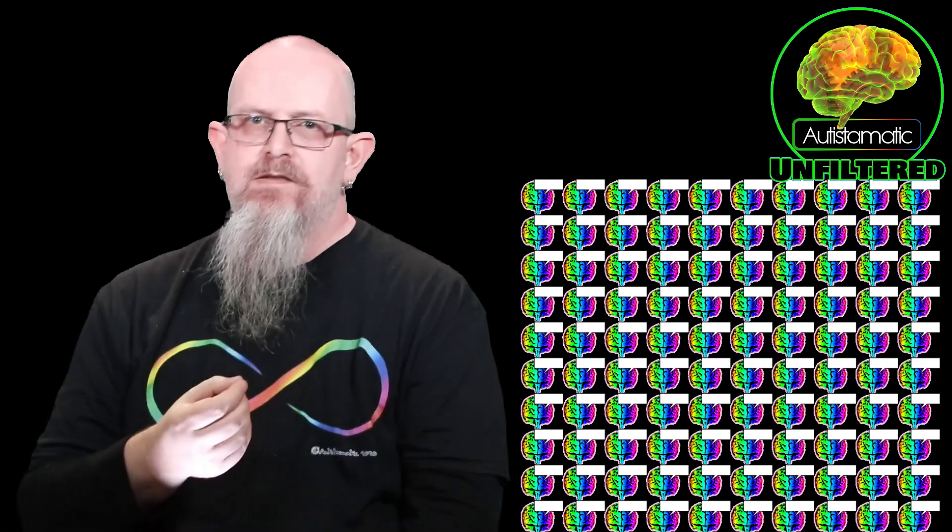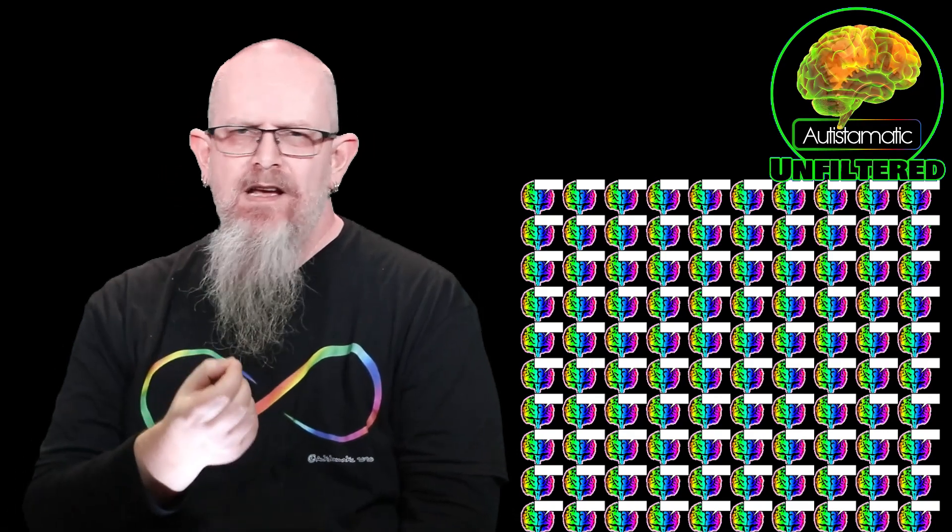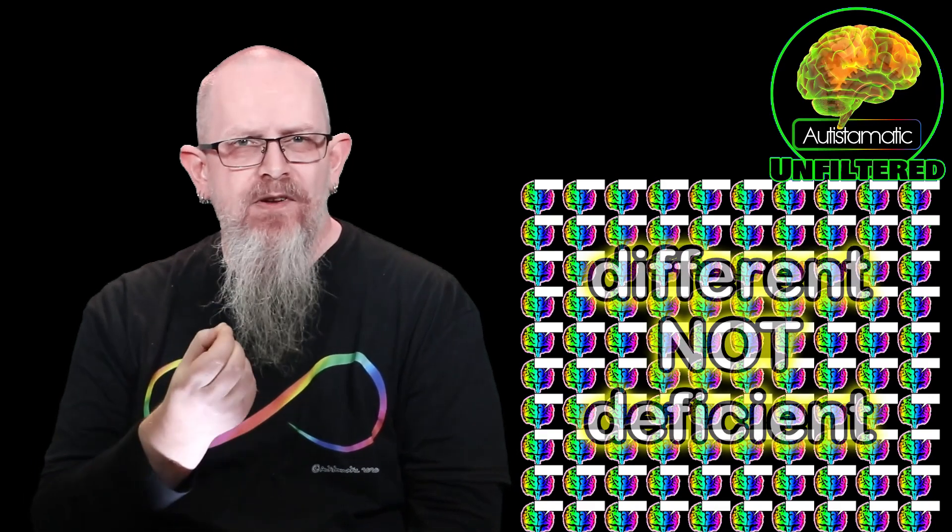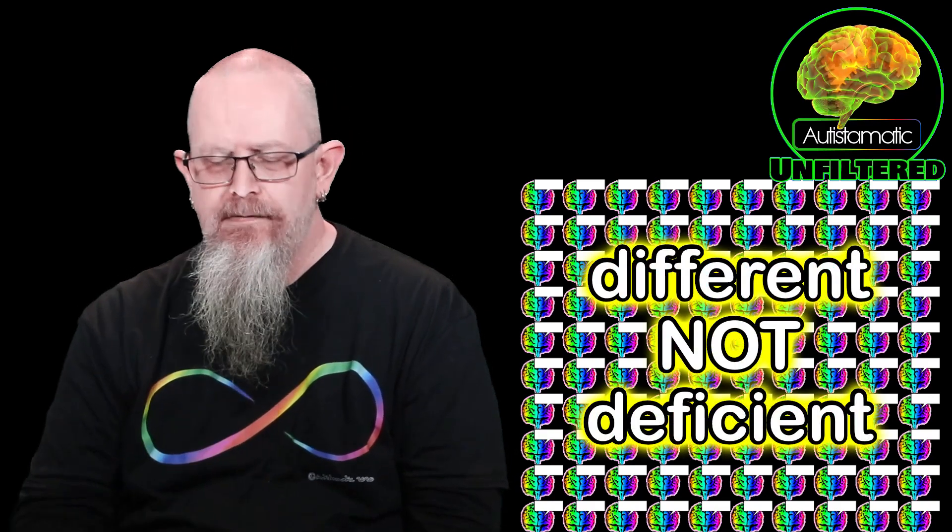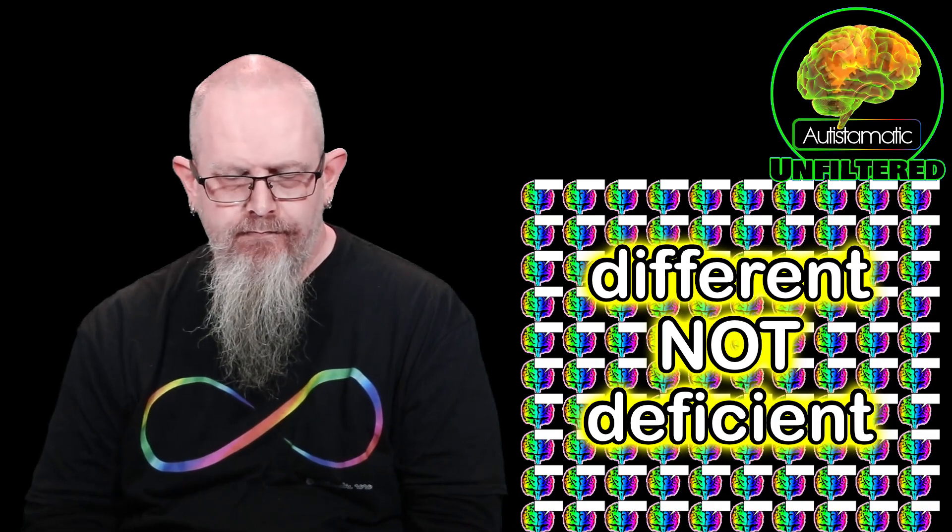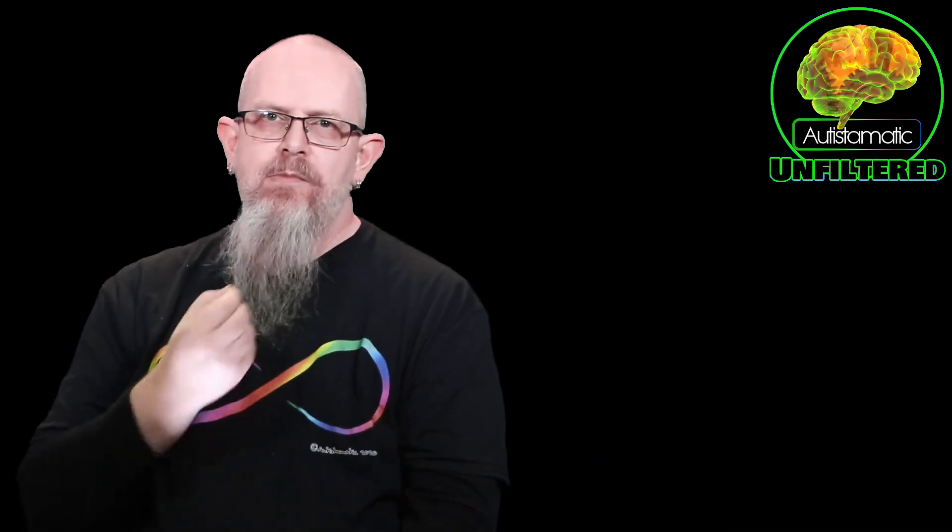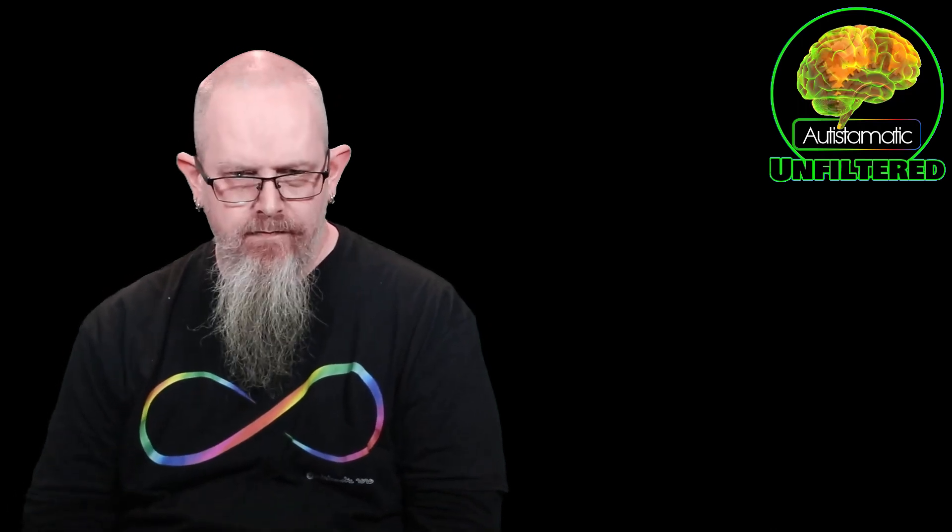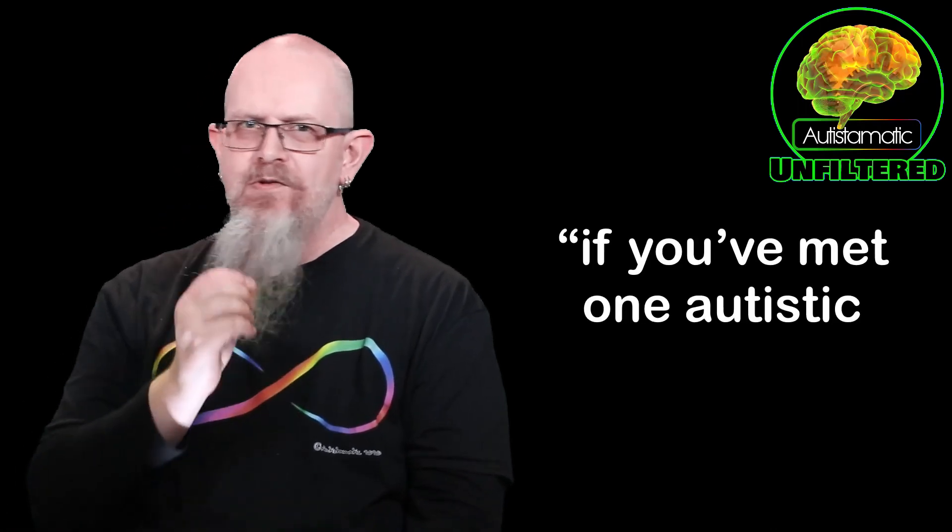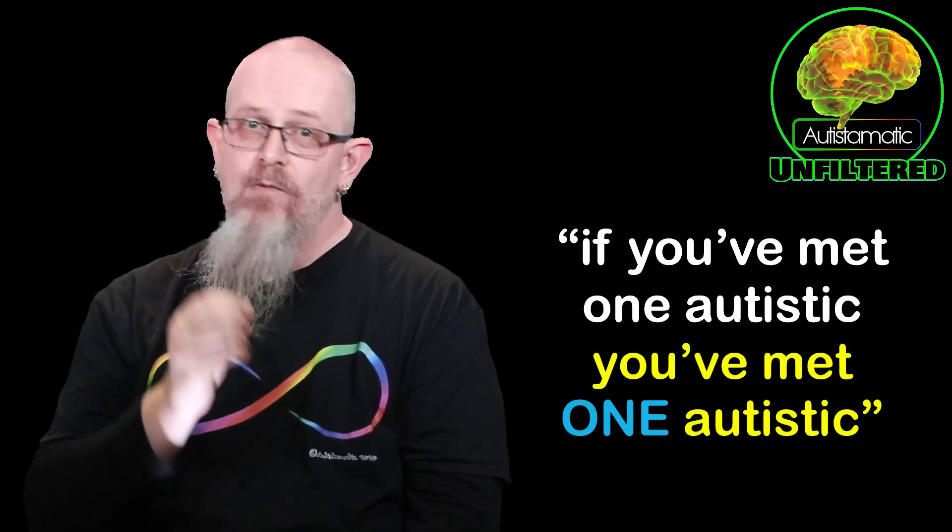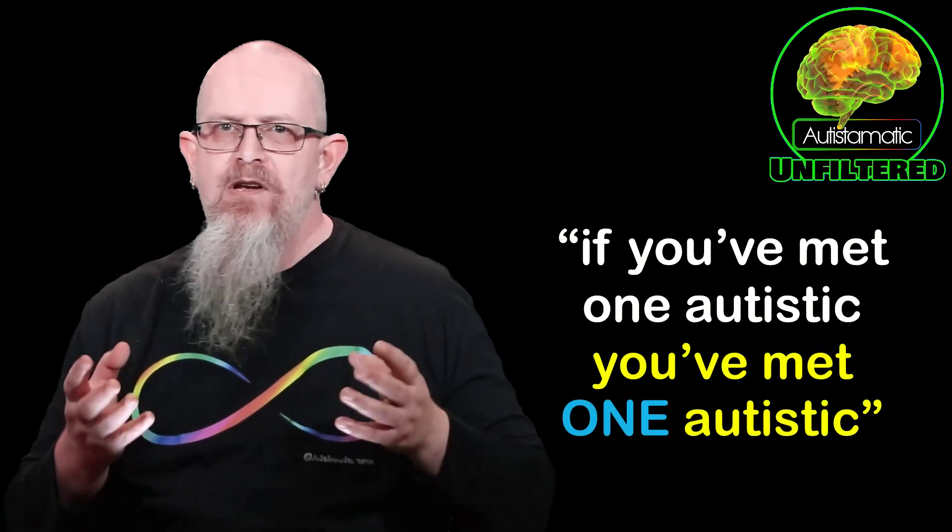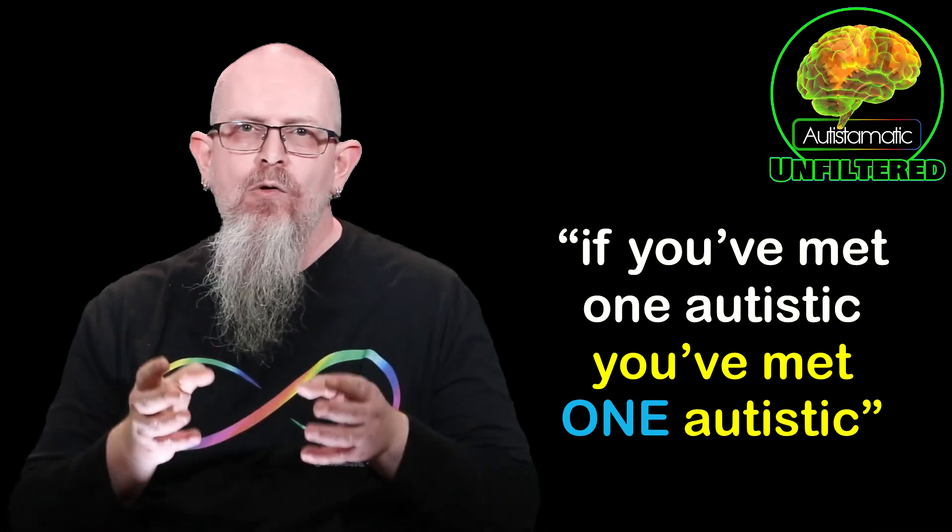Many of those reasons would no longer exist if only we were understood and accepted as just being different instead of deficient. There's a phrase you'll come across over and again in autistic circles: If you've met one autistic, you've met one autistic. Because for all we have in common, we are all unique.